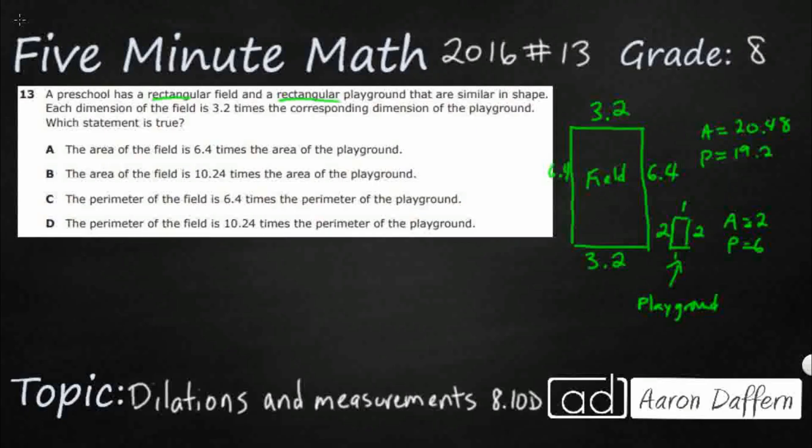So let's take a look at what happened. The area of the field is 6.4 times the area of the playground. So the area of the field equals 6.4 times the area of the playground. Well, we know what those numbers are. So let's see if it works. So the area of the field, so that's 20.48, is 6.4 times the area of the playground, which is 2.